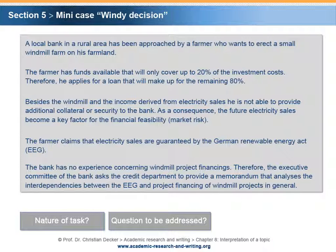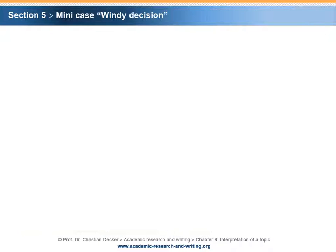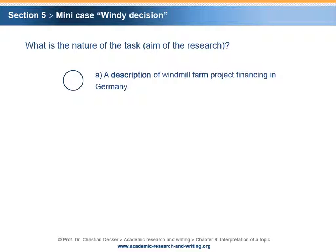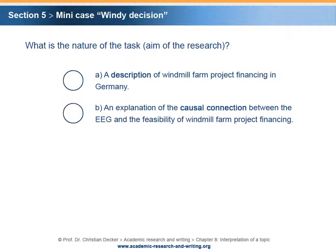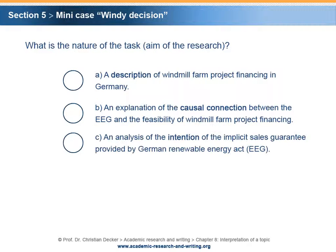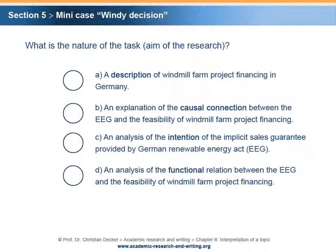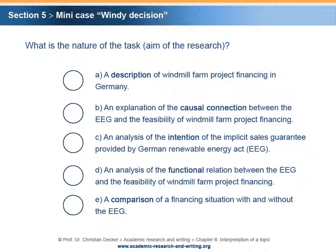Please stop here and take five minutes to think about the two questions and to write down short answers. What is the nature of the task or aim of the research? A. A description of windmill farm project financing in Germany. B. An explanation of the causal connection between the EEG and the feasibility of windmill farm project financing. C. An analysis of the intention of the implicit sales guarantee provided by the German Renewable Energy Act. D. An analysis of the functional relation between the EEG and the feasibility of windmill farm project financing. E. A comparison of the financing situation with and without the EEG.